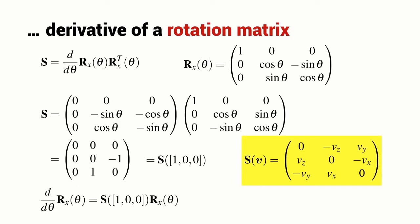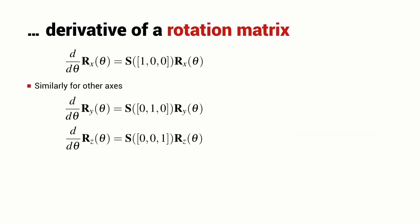So the derivative of a rotation matrix with respect to theta is given by the product of a skew symmetric matrix multiplied by the original matrix. I can perform the algebraic manipulation for a rotation around the y-axis and also for a rotation around the z-axis and I get these expressions here and you can clearly see some kind of pattern.